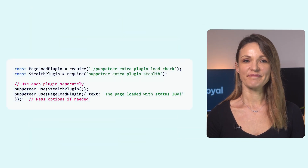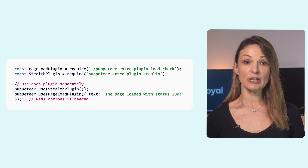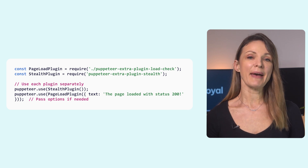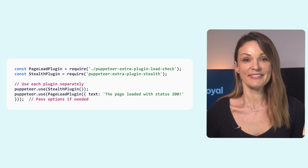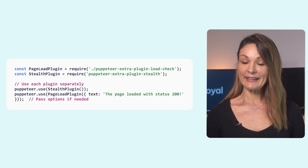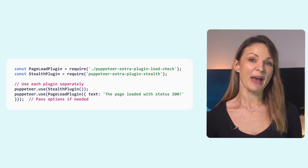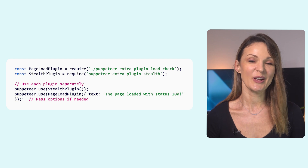Finally, update the main code so it can use both the Puppeteer Extra framework and the new plugin. Just make sure the string under Page Load Plugin matches your plugin's file name, and you're good to go. If everything is set up correctly, both plugins will run and you'll see some output in your console.